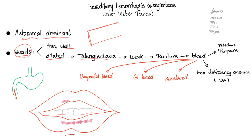I love this word. What does ectasia mean? Ectasia means dilation. What does angio mean? Angio means vessel. What does tele mean? Distant, far. You remember? Telescope, television. So telangiectasia is dilation of distant vessels.